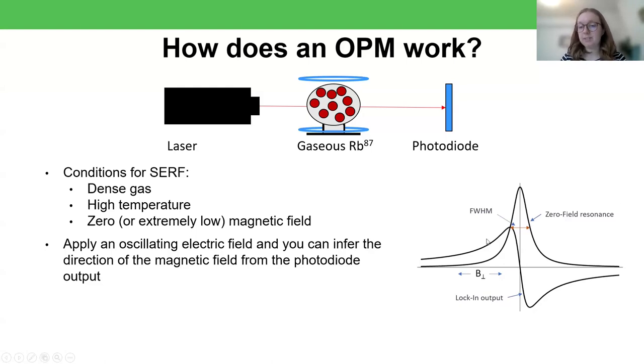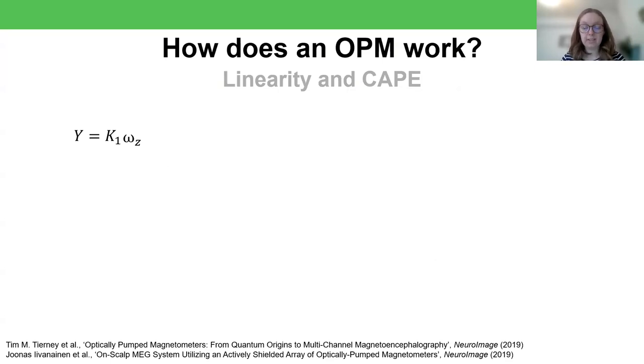So what you might notice is that this curve is not totally linear. Not only do we have these turning points, after which again we're getting the same problem of having two magnetic fields corresponding to the same voltage, but also even in this middle region, the voltage that you see as a function of magnetic field doesn't appear to be completely straight. And we can express that mathematically with the OPM signal equation. So if everything were perfectly linear, and this is sort of the equation that we'd use for a squid system, this is really the equation that you'd see. Y here is your output, your voltage from your photodiode, omega z is the signal that you're interested in, and k is just some constant.